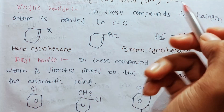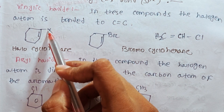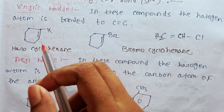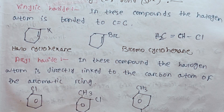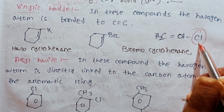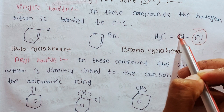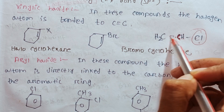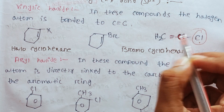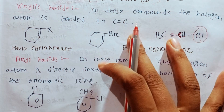R3 halide, then benylic halide. Benylic halide uses halogen atom which means carbon-attached sp2 hybridization. Then benylic halide will use halogen atom and carbon-attached sp2 hybridization.